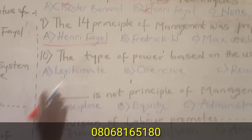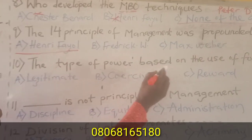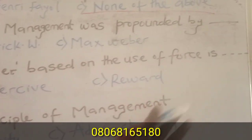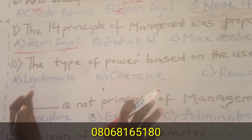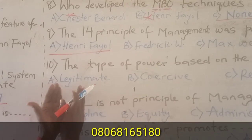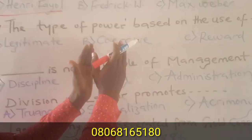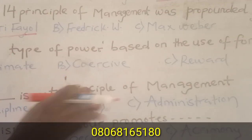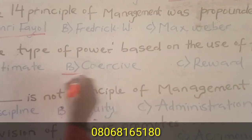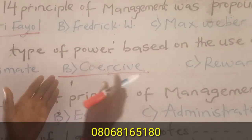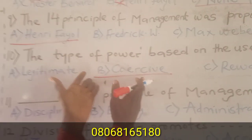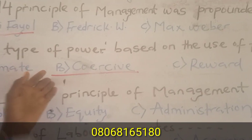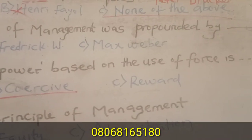Question ten: The type of power based on the use of force is what? We have different types of power: legitimate power, coercive power, and reward power. The one that has to do with the use of force is called coercive power. This type of power is usually used by military personnel — they use force to implement action.